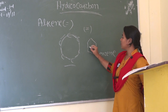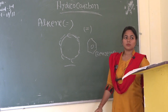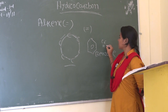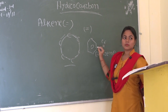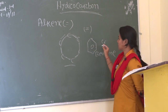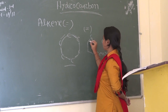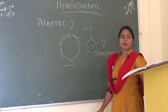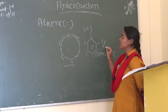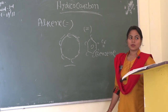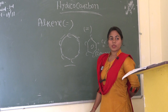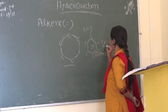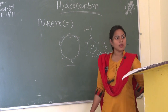How many carbons are in benzene? Six. And how many hydrogens? The molecular formula of benzene is C6H6.